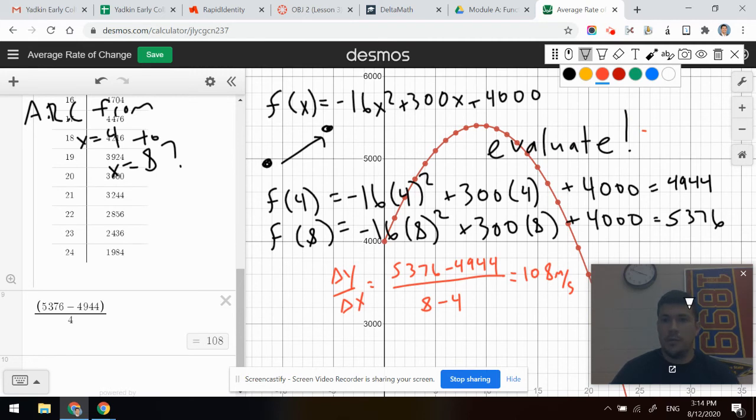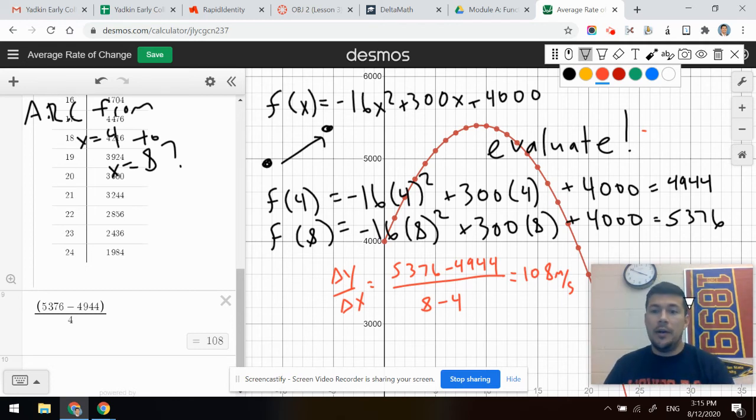So when we find those outputs, we're basically going to go ahead and say, well, these are my two Y values, even though I don't have a table. But even if I didn't have a table and I can't really read the graph, I find the change in my Y's and divide it by the change in my X's and I end up getting 108.